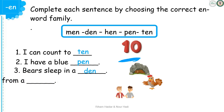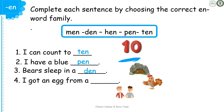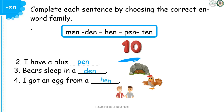Now sentence number four: I got an egg from a... What do you see? Excellent! Hen. So, I got an egg from a hen.